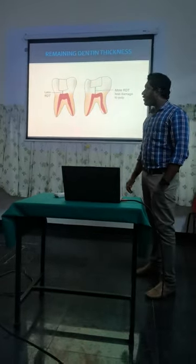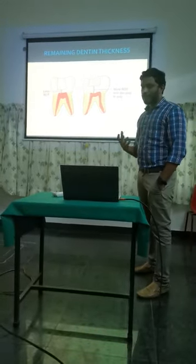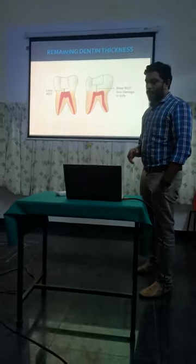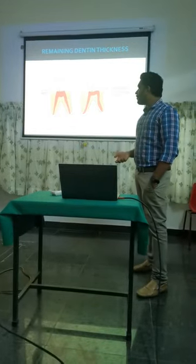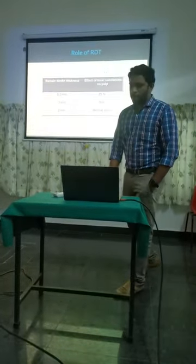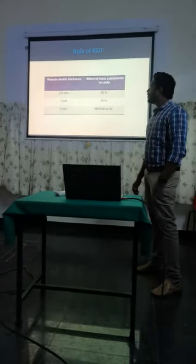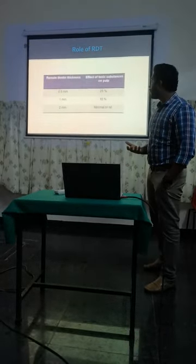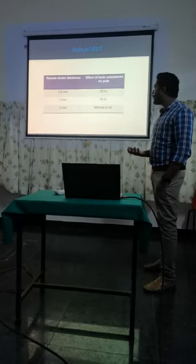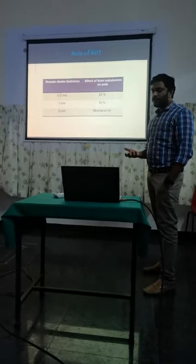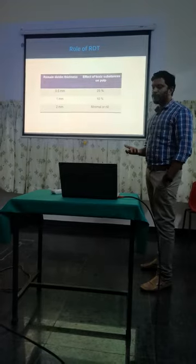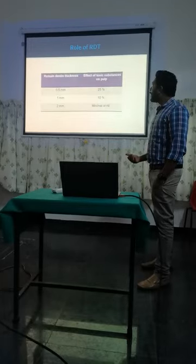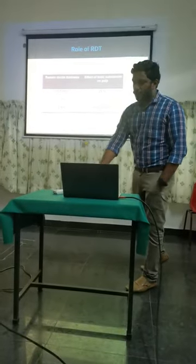Remaining dentin thickness is also important. How much dentin is remained after the cavity preparation? According to that we use cavity liner, base and varnish. If the remaining dentin thickness is only 0.5 mm, the effect of toxic substances to the pulp will be 75%. If there is 1 mm of remaining dentin thickness, it will cause only 10%. And if the remaining dentin thickness is 2 mm, there will be minimal or no toxic substances to the pulp.